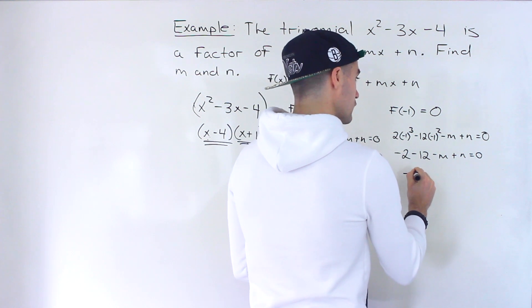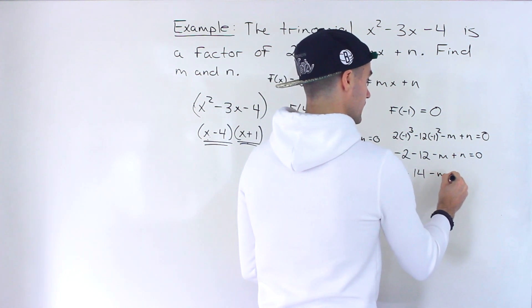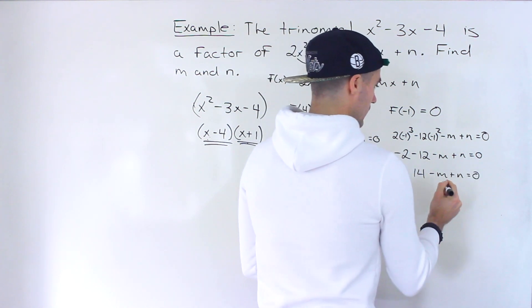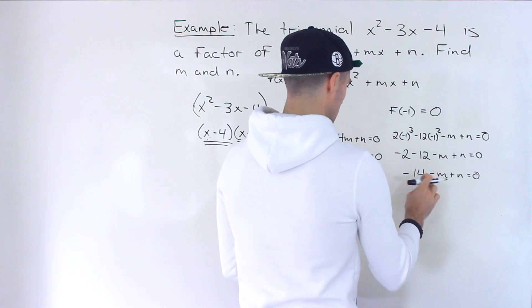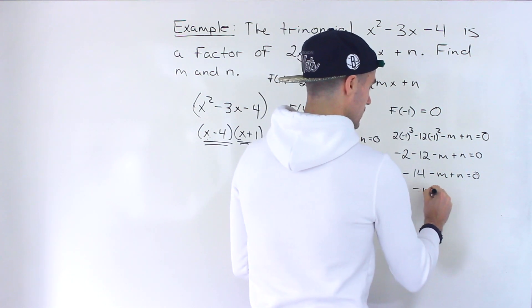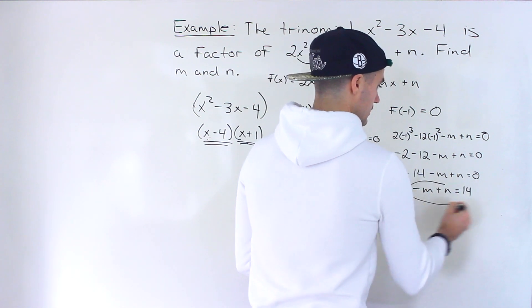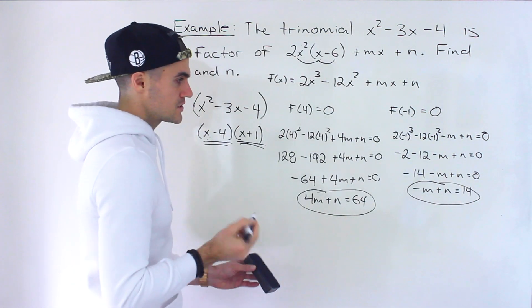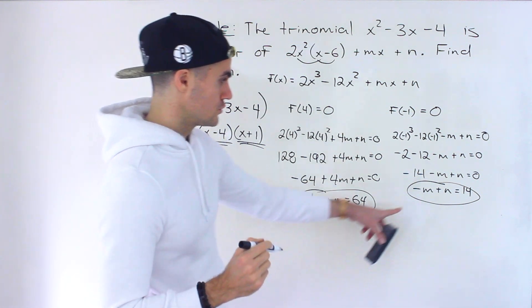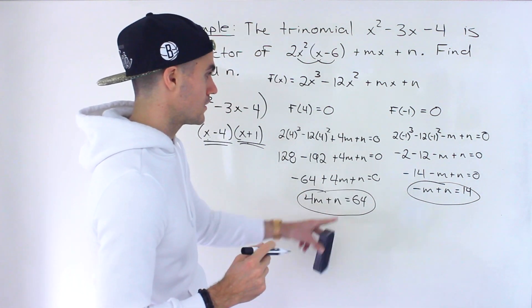This here ends up being negative 14. And then I'll bring the negative 14 over. So it will be positive 14 like that. And now we just simply have two equations, two unknowns. You could do substitution, you could do elimination.